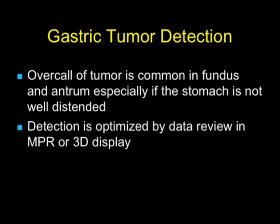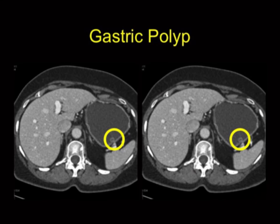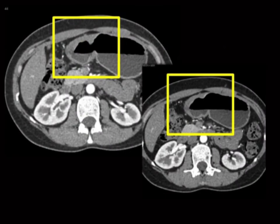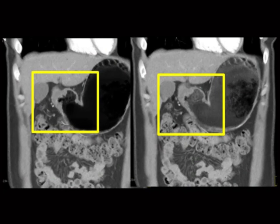Gastric tumor — this goes under both technique and how we read the study. The critical thing is gastric distension, and the second part is how you look at the images. Good example: a small polypoid lesion in the gastric fundus under a centimeter, easy to see because the stomach is distended. Or this case — abdominal pain, the antrum is thickened. That's not lack of distension, that's infiltration; the stomach is nicely distended. On the coronal view it's very clearly seen — classic carcinoma of the stomach. You made the right diagnosis to manage the patient.